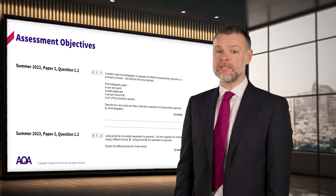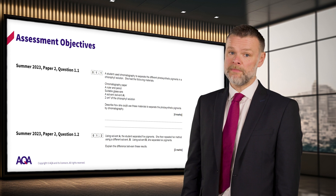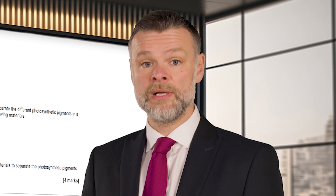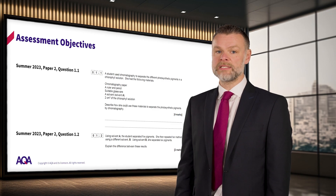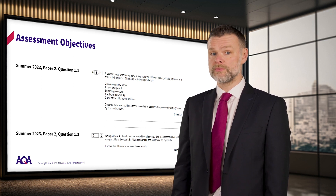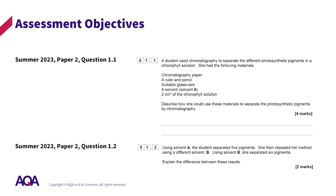There are some additional important things to note about these questions. Firstly, the command words are clear in each question: 'describe' for 1.1 and 'explain' for 1.2. The materials, including chromatography paper and a ruler and pencil, are given as a list with each material on a new line. If this had been written with each in a sentence separated by a comma, this may not be accessible to all students. The number of marks is indicated underneath each question. This can help clue students into how much they are expected to write. The number of lines is always appropriate for the question. The general rule in A-level biology is three lines per mark point, unless the answer is just one word. These lines can also be prefixed with numbers or words to help guide students in their responses.